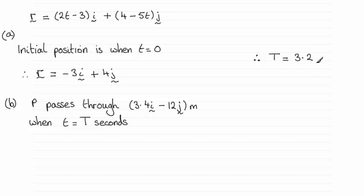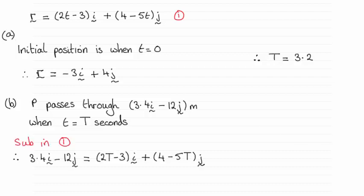So if you're unsure of this, I'm just going to take you slowly through this. All you need to do is call this equation up here equation 1 and substitute your value T into here and compare the components when R is equal to 3.4i minus 12j. And you should be able to solve for T.